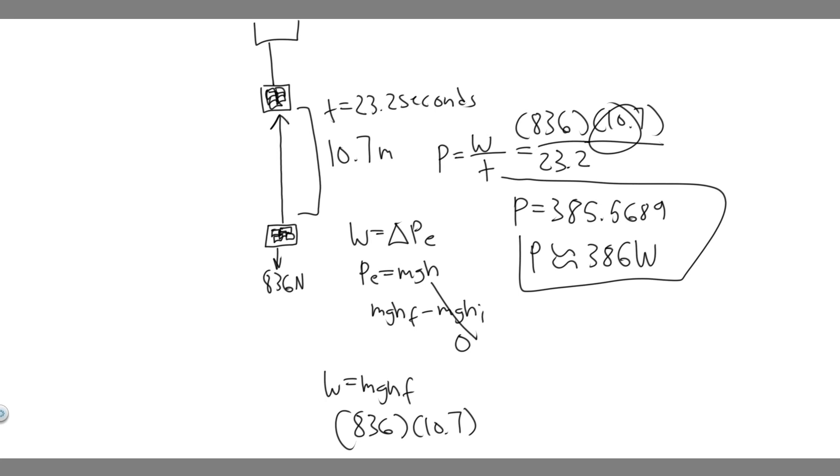So power is going to be equal to about 386 watts. Or if you want the exact number, you can use that. You can also put this in horsepower. So if you want to convert it into horsepower, all you got to do is divide by 746. Because we know 746 watts is equal to 1 horsepower.